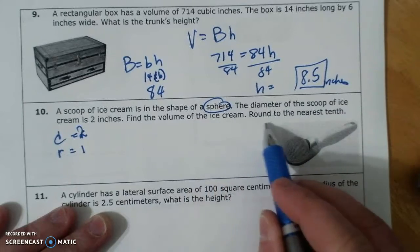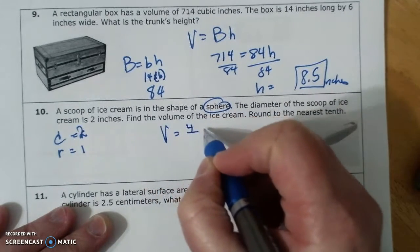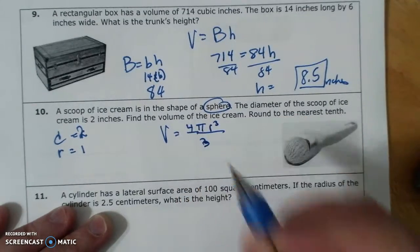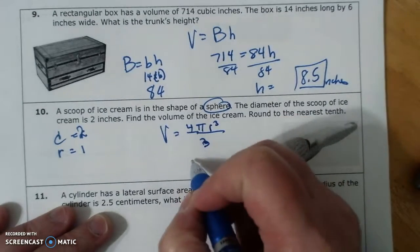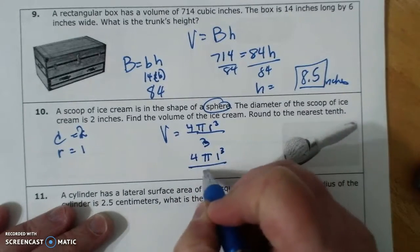Find the volume of the ice cream. Volume equals 4 pi r cubed over 3. That is very sloppy. Which is 4 pi 1 cubed over 3.